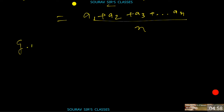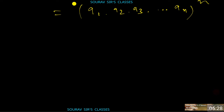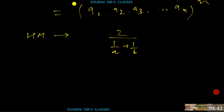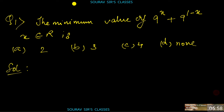The geometric mean (GM) for two numbers is √(A × B), and for n numbers it is (A1 × A2 × ... × An)^(1/n). The harmonic mean (HM) for two numbers is 2/(1/A + 1/B), and for n numbers it is n/(1/A1 + 1/A2 + ... + 1/An).